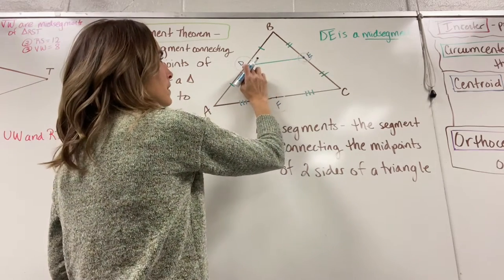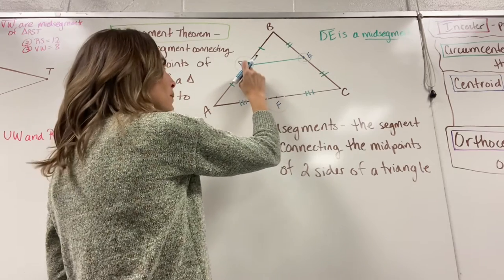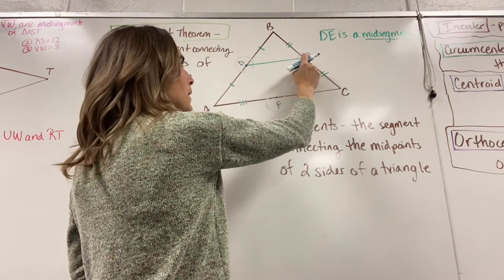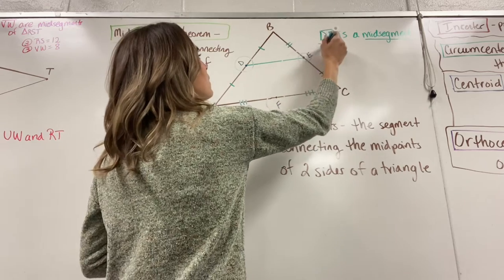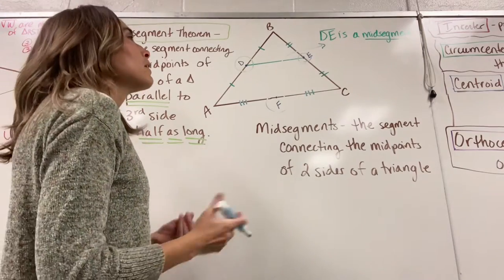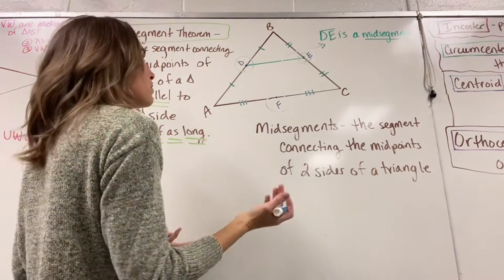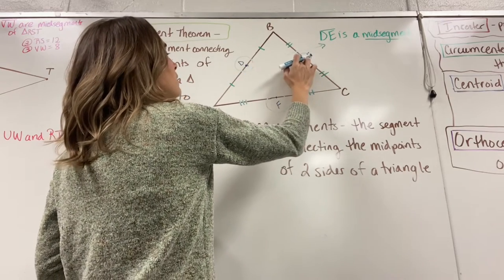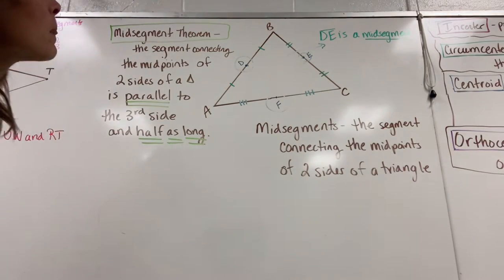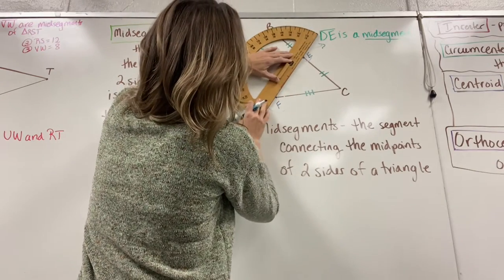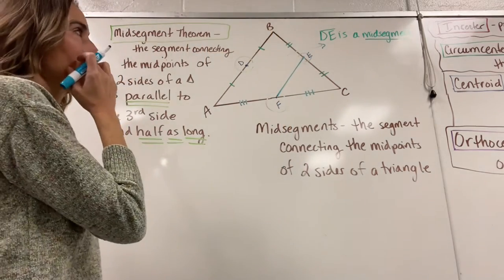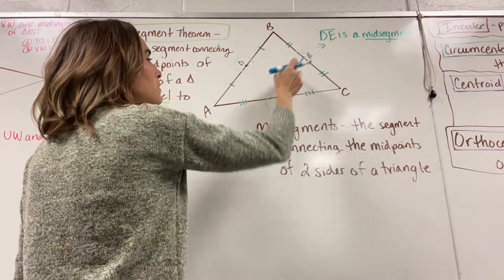So a mid-segment connects the midpoints of two sides of a triangle. DE right here connects the midpoint from side AB and the midpoint from side BC. We draw in a segment connecting those two midpoints, and this becomes a mid-segment. DE is a mid-segment. We can also have a mid-segment connecting two other sides — I can draw a mid-segment from E to F, and that's another mid-segment. It connects the midpoints of two sides of a triangle.